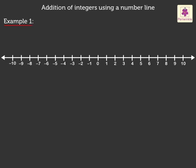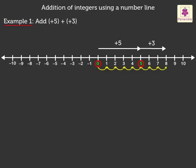Example 1: Add positive 5 plus positive 3. Firstly, start from 0 and move 5 places to the right. We reach positive 5. Now, move 3 places to the right from positive 5 and reach positive 8. We found the answer — it is positive 8. Hence, positive 5 plus positive 3 is equal to positive 8.